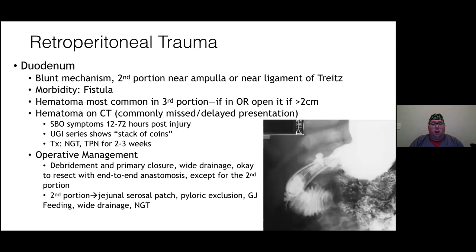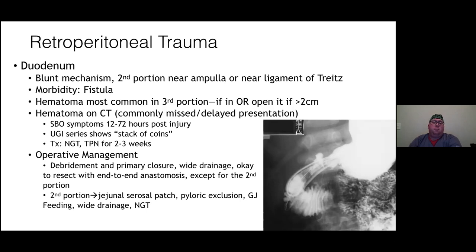Moving to the retroperitoneum and duodenum: if there's a perforation, primary repair or resection can be done, but not for the second portion due to the ampulla. Alternatives include primary repair, jejunal serosal patch, pyloric exclusion, gastrojejunostomy, wide drainage, and NG tube decompression. A duodenal hematoma causing small bowel obstruction typically occurs 12–72 hours after injury; upper GI shows a 'stack of coins' appearance. Management is non-operative: NG tube and TPN for a couple of weeks to allow hematoma resolution.